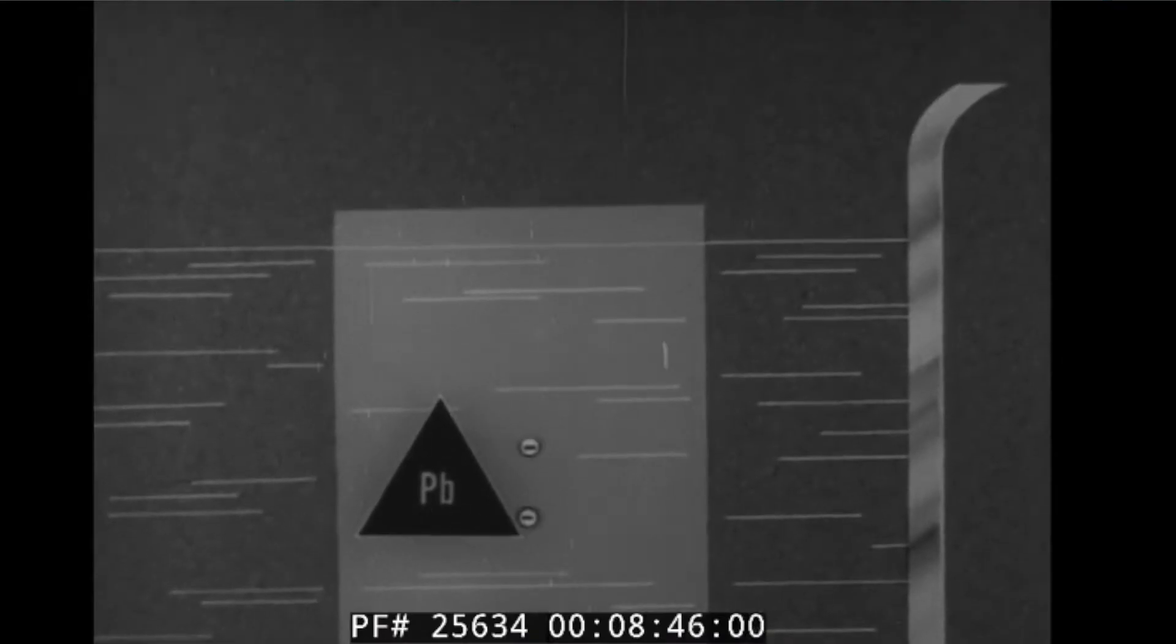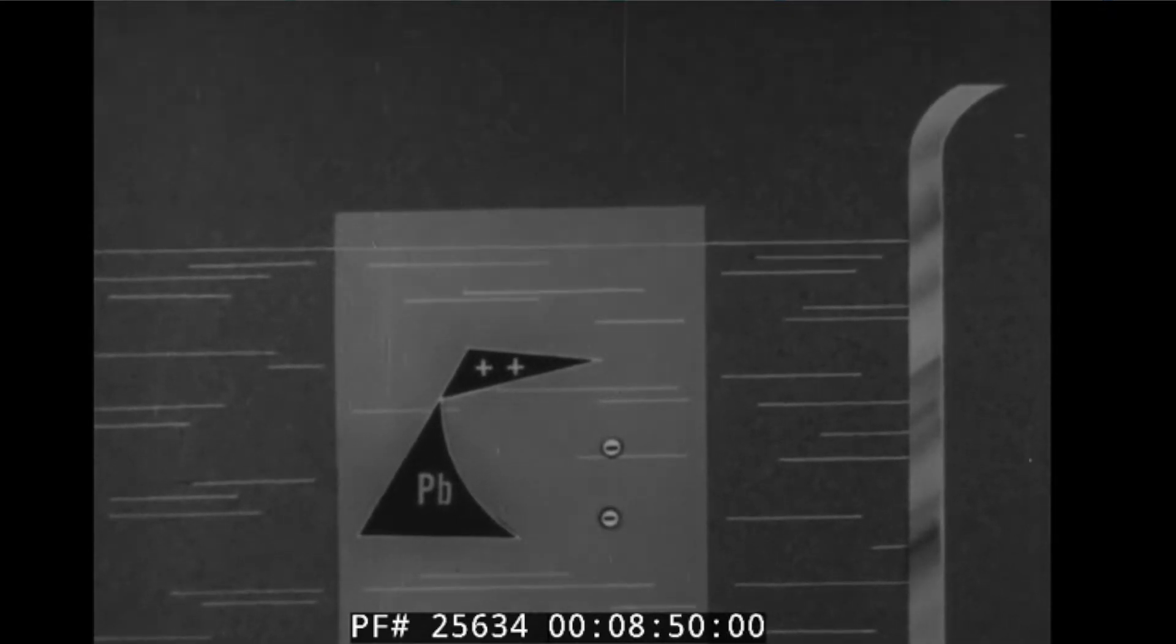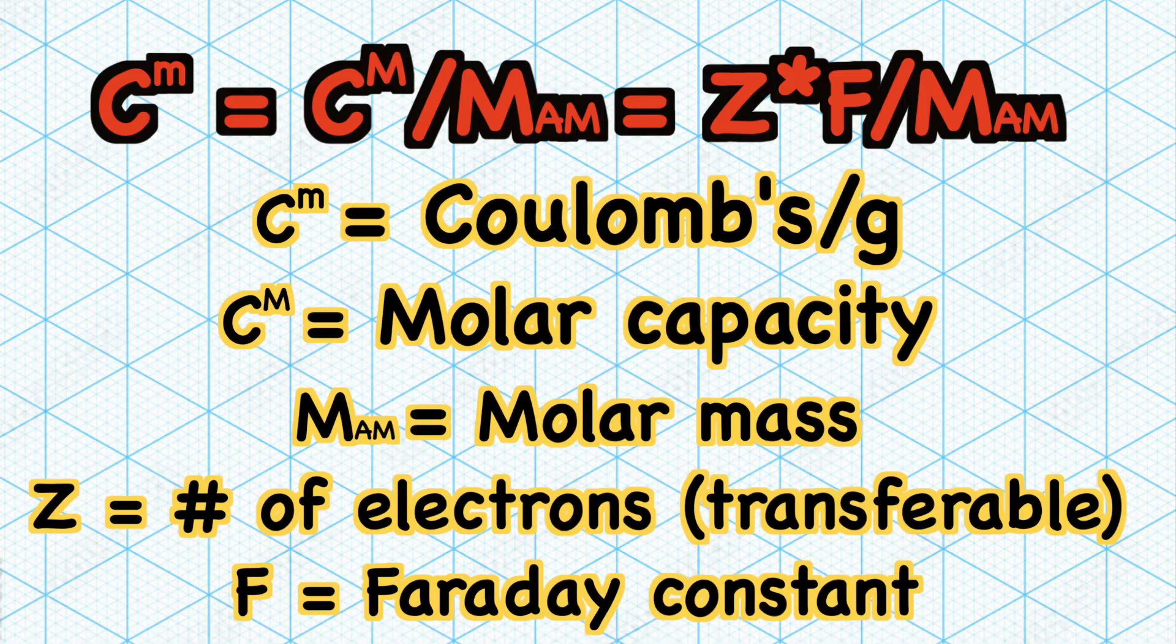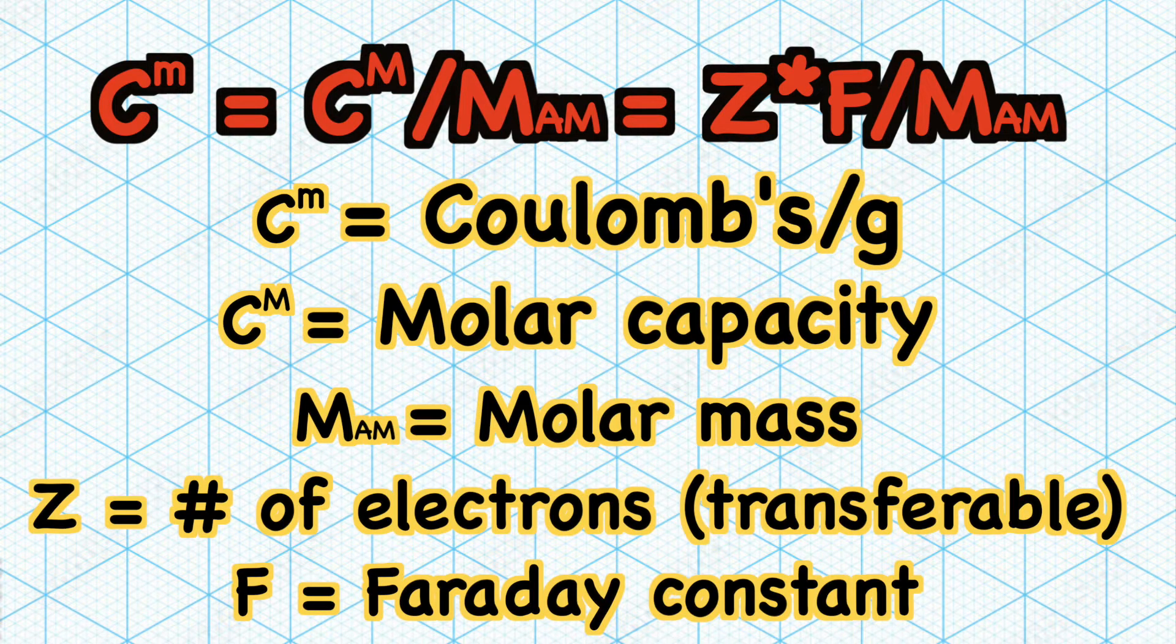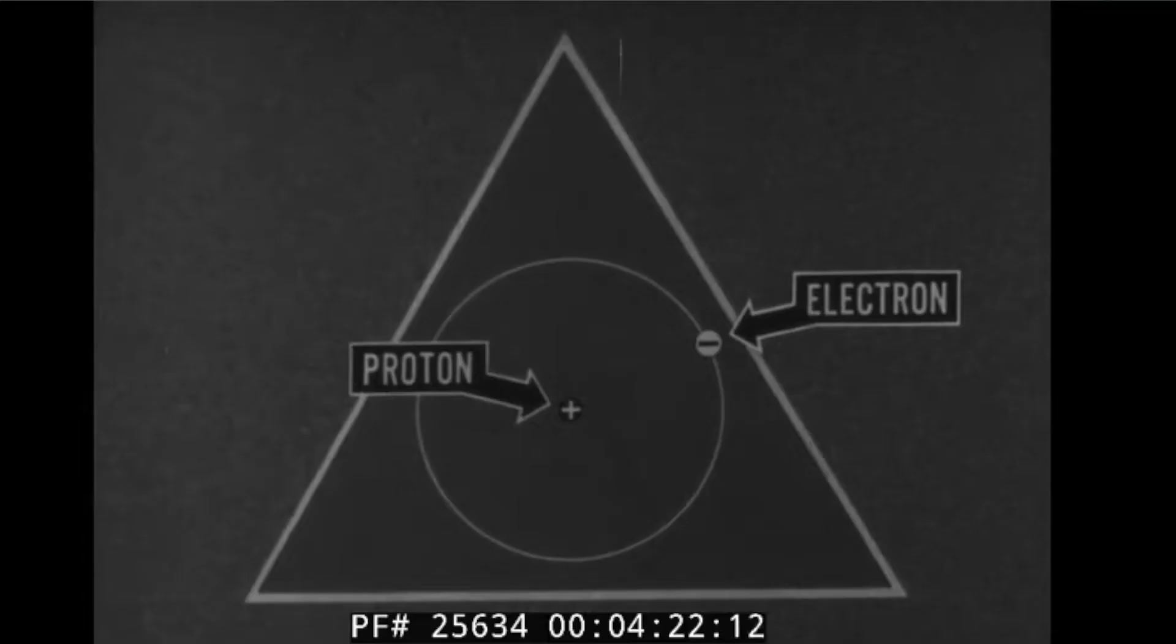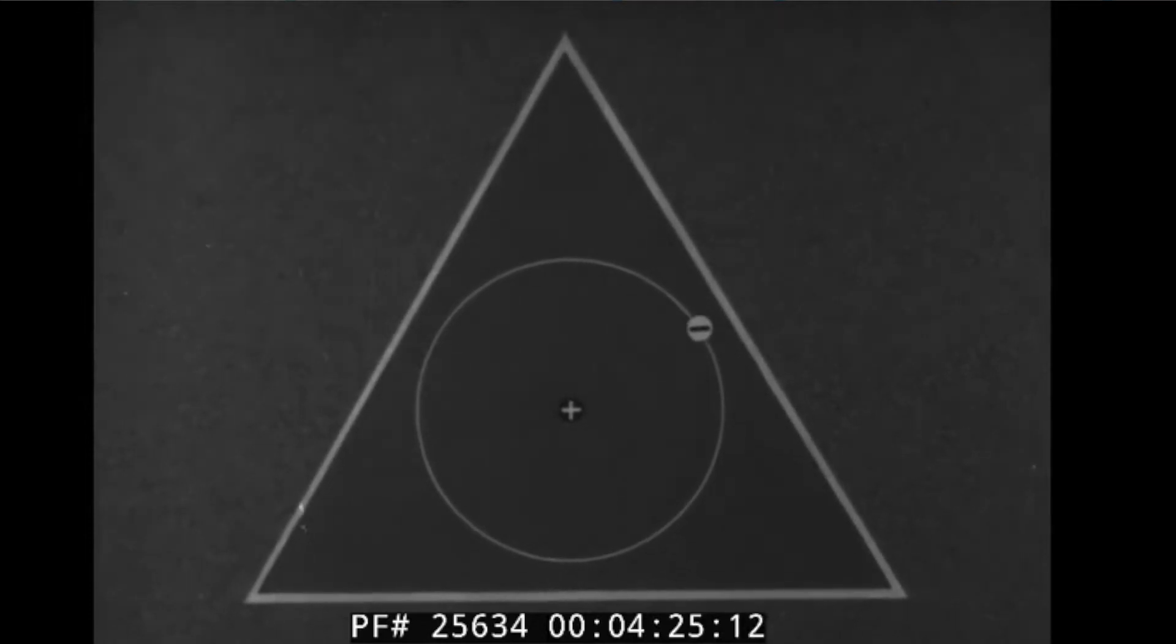So in order to solve for specific capacity in electrochemical cells, this is the formula. First of all, we need to know the number of electrons that can be transferred in the redox reaction, which is represented by the Z.